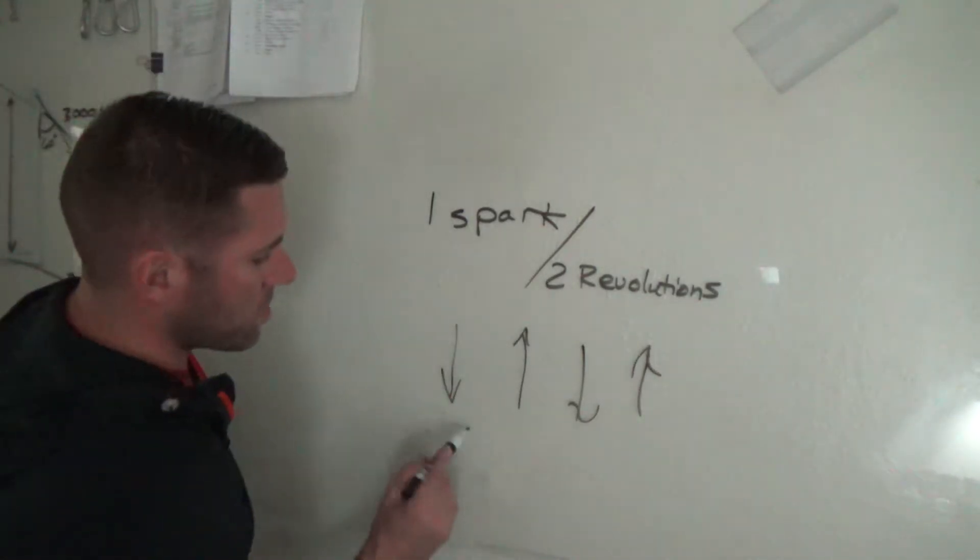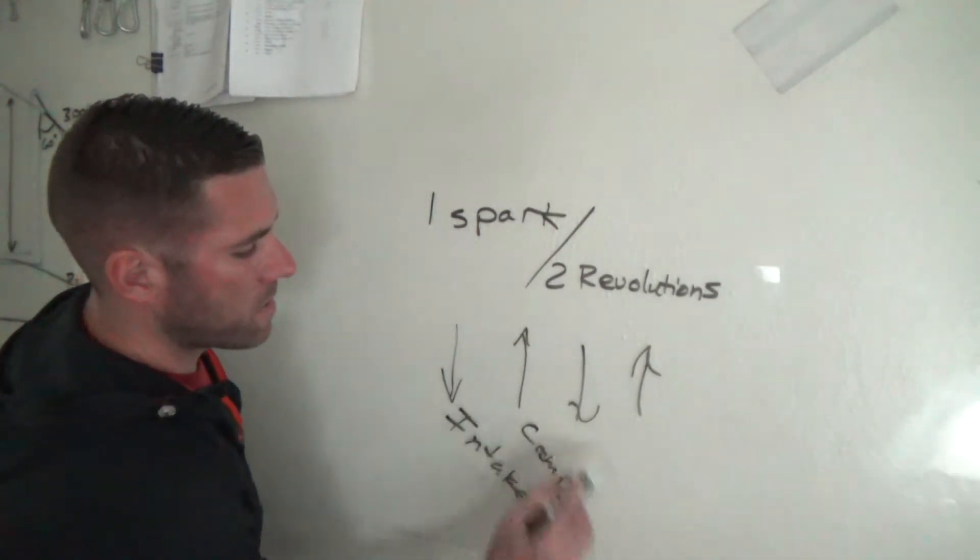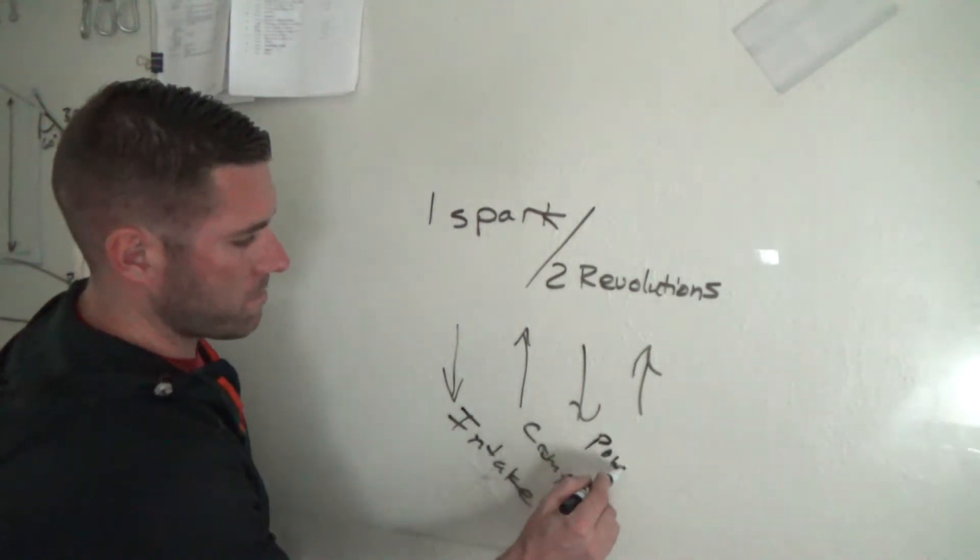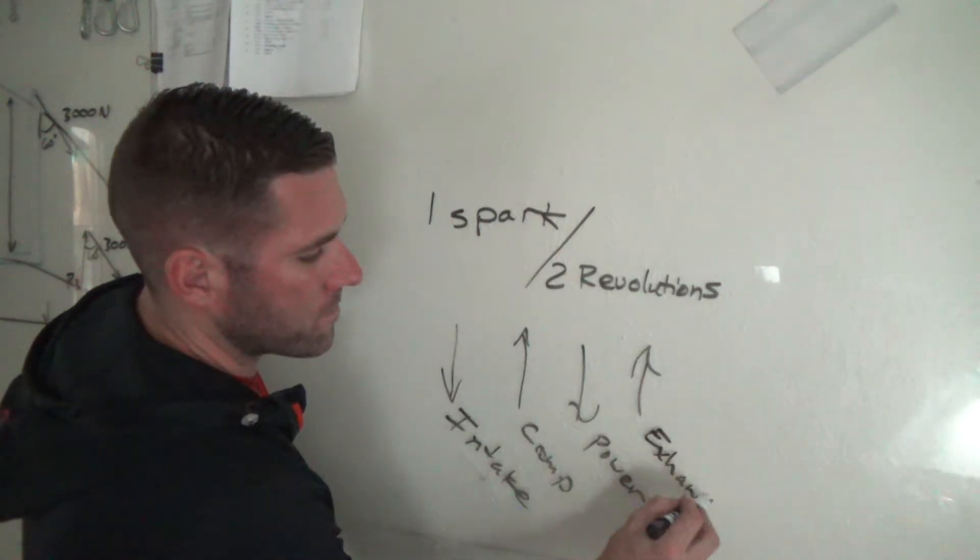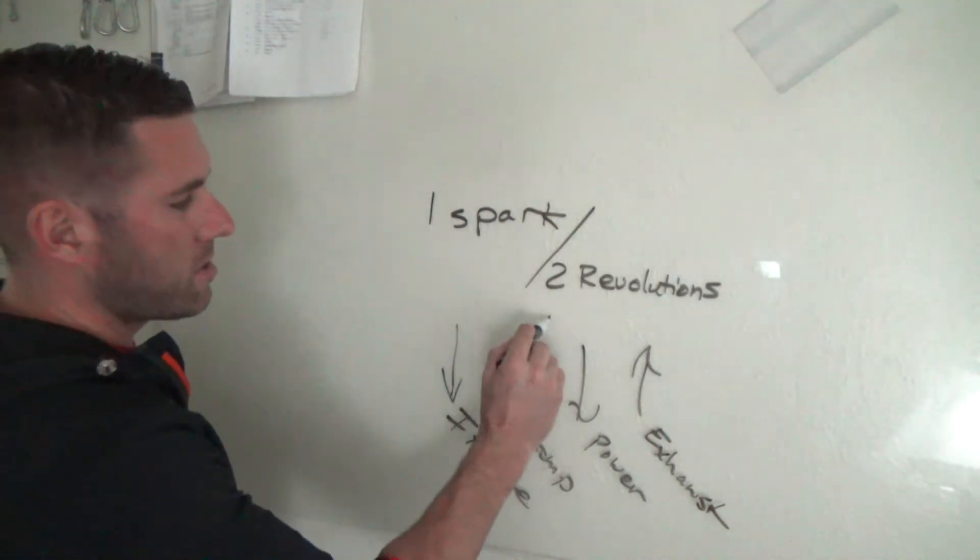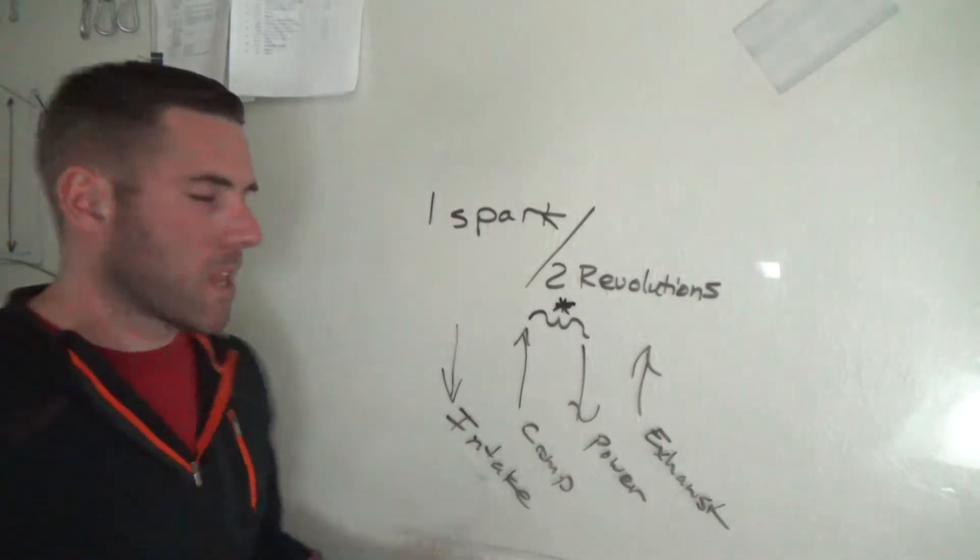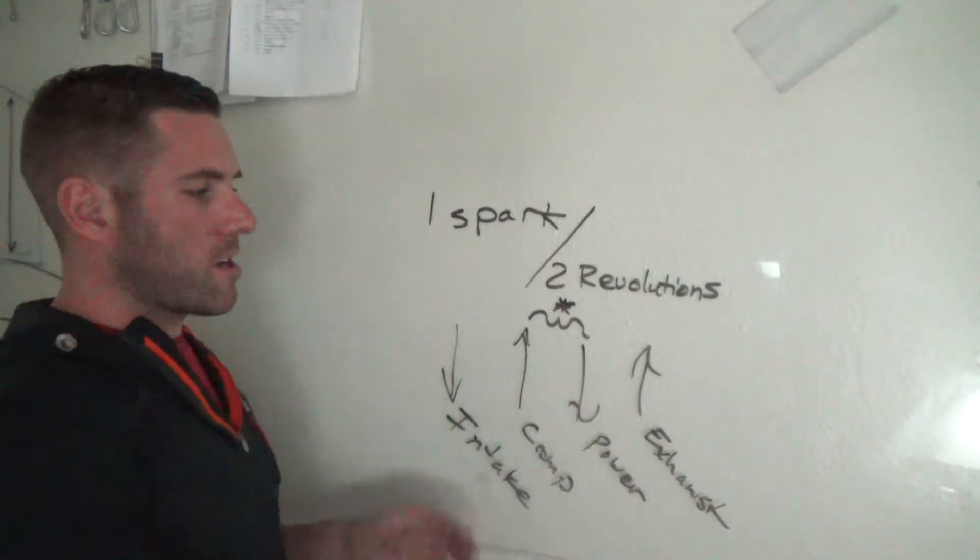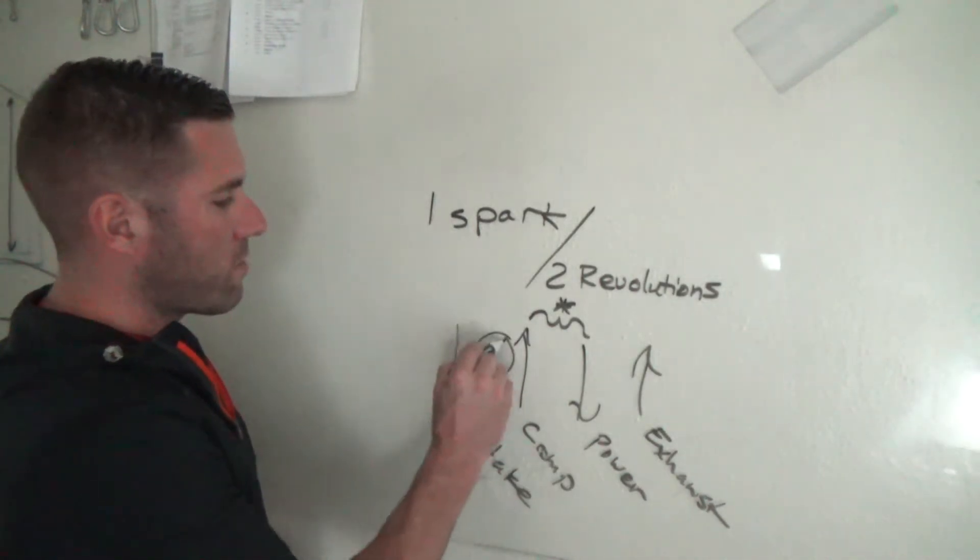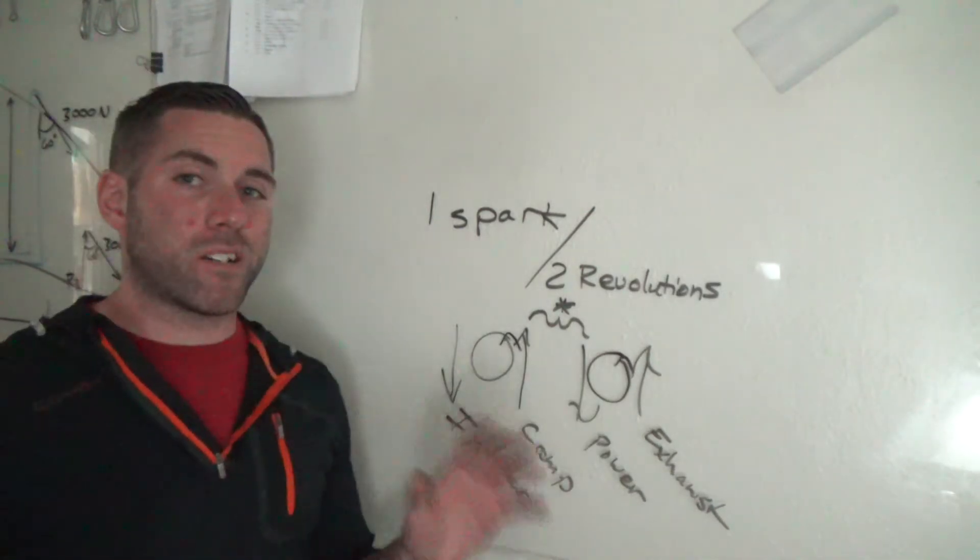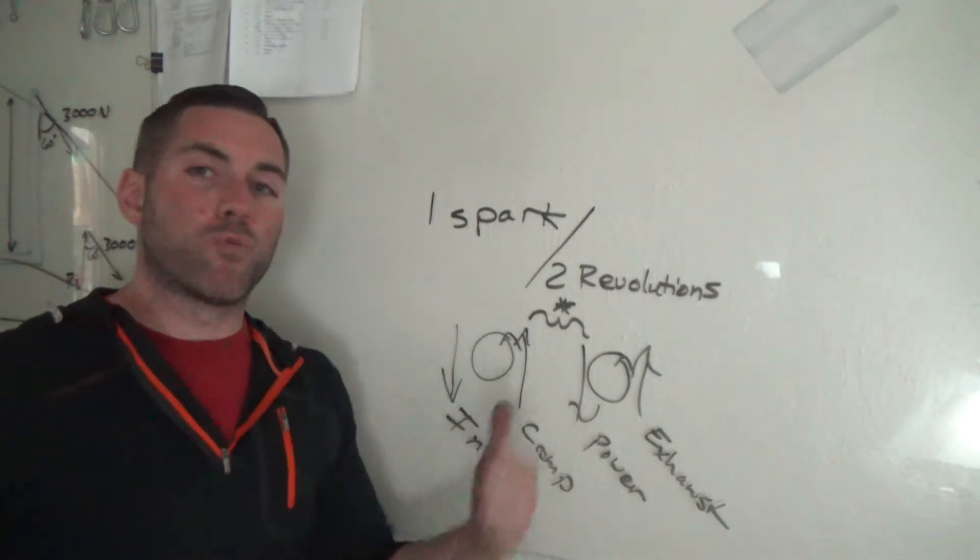And what you got is your intake stroke, your compression stroke, then you got your power stroke, not to be confused with the dirty D, then you got your exhaust stroke. Now what's happening is you're getting a spark right in this region. And what you're reading when you read per spark is you're reading two RPM. That's how I'm getting this right here is because you got to go through one revolution and then another revolution. So technically we were at two RPM and we only fired one time.